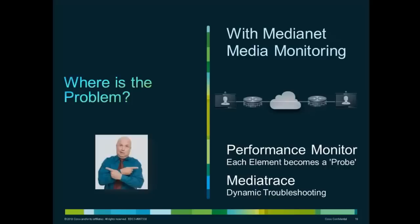The next key set of capabilities is called media monitoring, which is the broad umbrella suite comprising performance monitoring as well as media trace. Performance monitoring is the ability for any MediaNet or MSI-enabled element in the end-to-end video deployment to become a probe on its own, and media trace is a dynamic troubleshooting technique. In most cases today, there is a significant challenge in just identifying which part of the network or which part of a large-scale video deployment has a problem. Both performance monitoring and media trace provide per-flow, per-hop visibility into flow metrics — packet loss, jitter, and delay — for any type of audio or video streams.